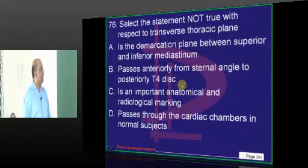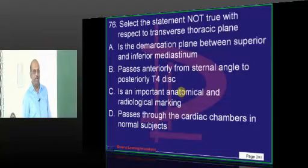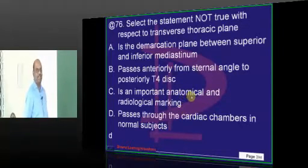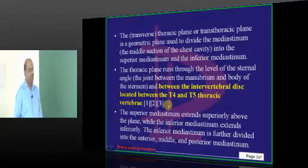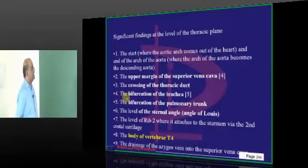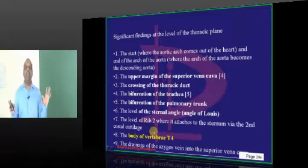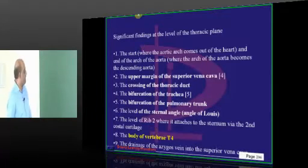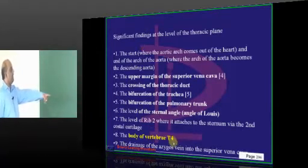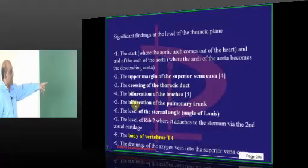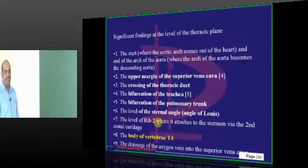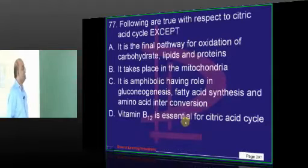D should be wrong, which is the correct answer. The transverse thoracic plane lies between the T4 and T5 intervertebral disc. There are nine landmarks marking the superior thoracic plane, which include the body of vertebra T4, upper margin of SVC, crossing of the thoracic duct, bifurcation of the trachea, bifurcation of the pulmonary trunk, and the sternal angle, among others.